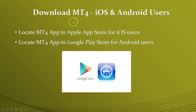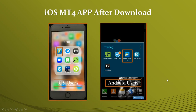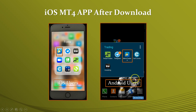To download the MetaTrader 4 application for your iOS or Android device, iOS users will go to the Apple App Store and Android users will go to the Google Play Store. In both applications, you will need to search for the MetaTrader 4 application. Once you've installed this application on your device, it will appear as follows — to the left is how it appears on the iPhone or Apple tablet, and to the right is how it will appear on your Android smartphone or Android tablet device.